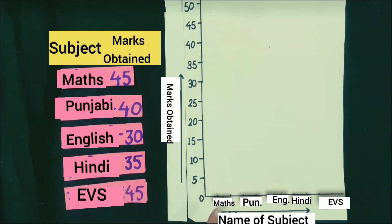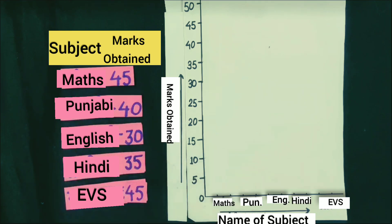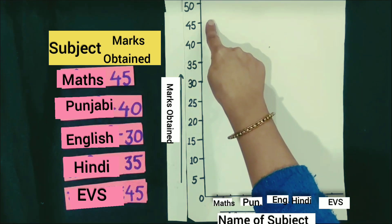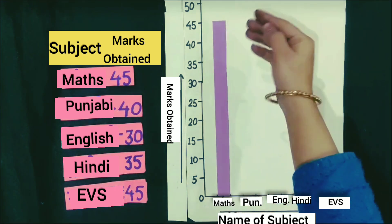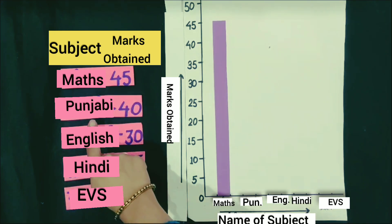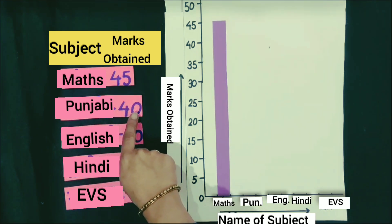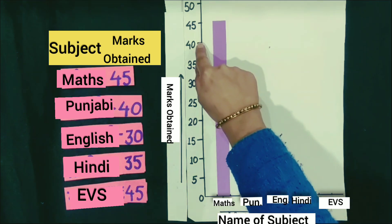Students, see — the first subject is Maths. In Maths, he got 45 marks. So the length of the rectangular bar of Maths subject is 0 to 45. After Maths, the next subject is Punjabi. In Punjabi, he got 40 marks. So the length of the rectangular bar of Punjabi subject is from 0 to 40.